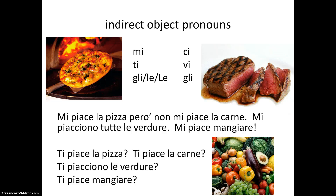Notice that in the second series of examples, the verb does not change form as the subject — that which is pleasing or not pleasing — does not change. However, the indirect object pronoun changes from mi to ti, as the person being pleased has changed from me to you. We could similarly ask a group of people: vi piace la pizza? The verb would stay in the third person singular, piace, as it corresponds to pizza, but vi would be our new recipient — 'you guys.' Do you guys like pizza?